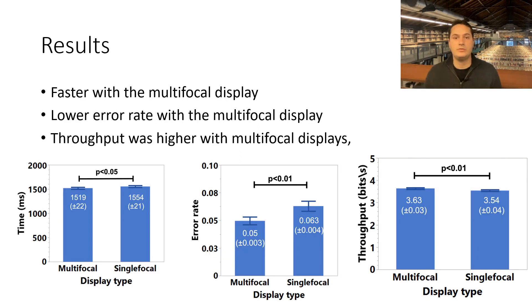Time results were significant for display type, movement direction, and index of difficulty. According to these results, the subjects were faster with the multifocal display than the single-focal one, and faster with the lateral movements compared to the movements in the view direction. While our highly controlled tasks exhibited only a small difference in time, more varied 3D-pointing tasks, as those encountered in practice, will likely exhibit a larger difference.